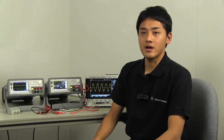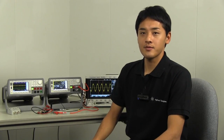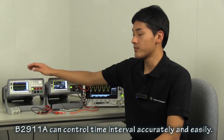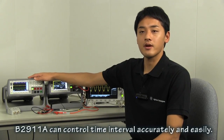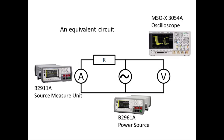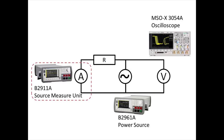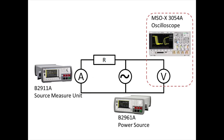When we measure current waveforms, we might have to set a specific constant time interval. We cannot control it accurately with conventional instruments. With the Agilent B2911A, we can control it easily. In this demonstration, I use these instruments: a power source as an AC voltage source, an SMU to measure current waveforms, and an oscilloscope to observe voltage waveforms.